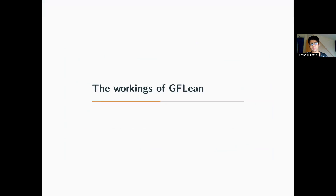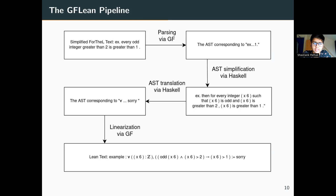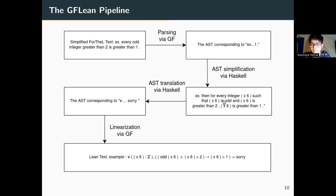Now we'll see how GFLean works. There are four main steps that GFLean takes to convert a Simplified FODL text to a Lean text. First, parsing is done via GF — a Simplified FODL text is taken and using GF we get an abstract syntax tree. Then we do some AST simplifications via Haskell so that the tree gets into a desirable form. After that we take the AST and translate it into ASTs for Lean expressions — this is done via Haskell. Finally, to go from the Lean ASTs to Lean expressions, we use GF again; this process is called linearization.